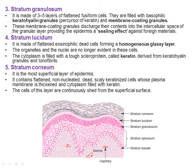The third layer is the stratum granulosum. It contains three to five layers of flat and fusiform cells filled with basophilic keratohyalin granules, which are precursors of keratin. It also contains membrane-coating granules that discharge their contents into the intercellular spaces of the granular layer, providing the epidermis with a sealing effect against foreign material.